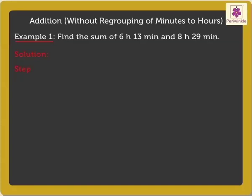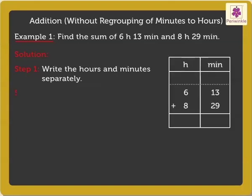Step 1: Write the hours and minutes separately. Step 2: Add the minutes. Adding 13 minutes and 29 minutes, we get 42 minutes.